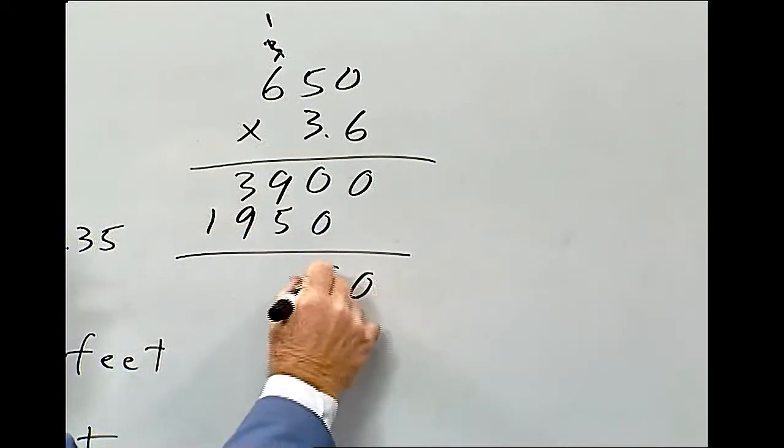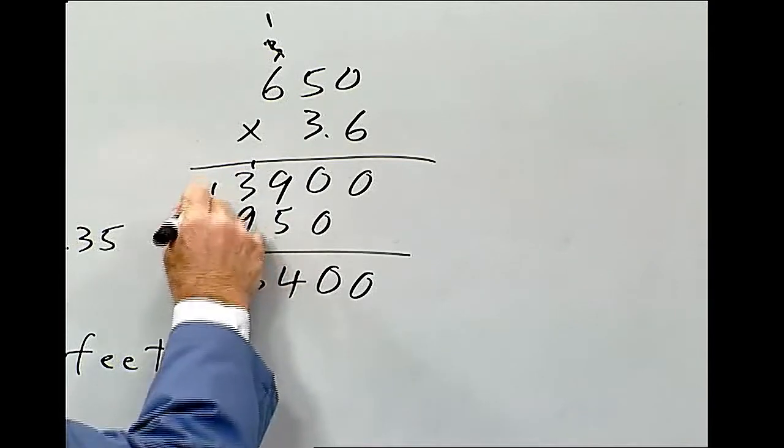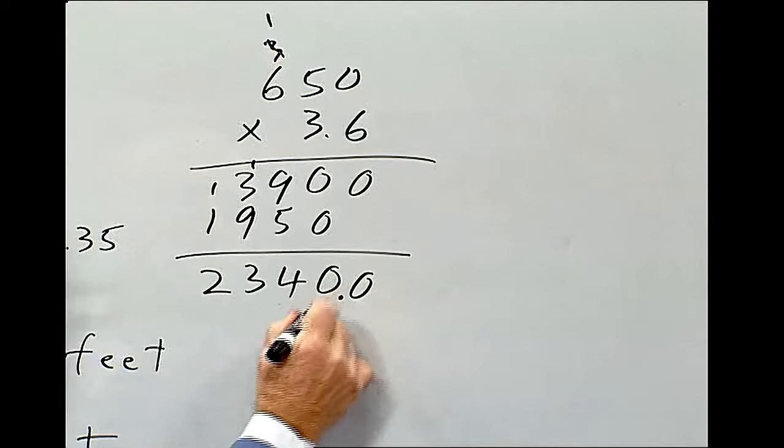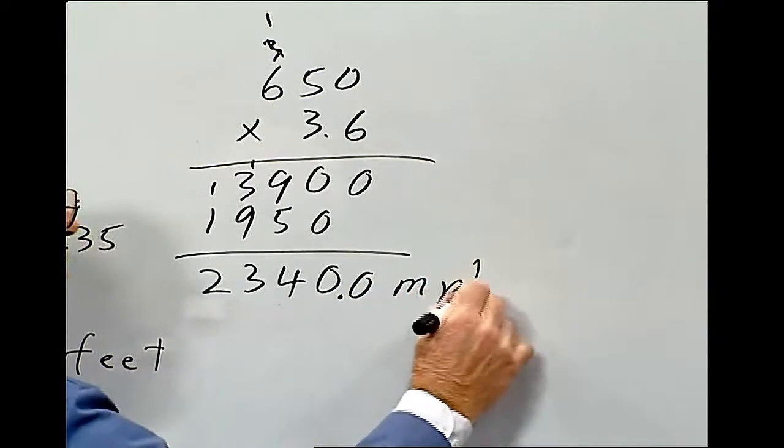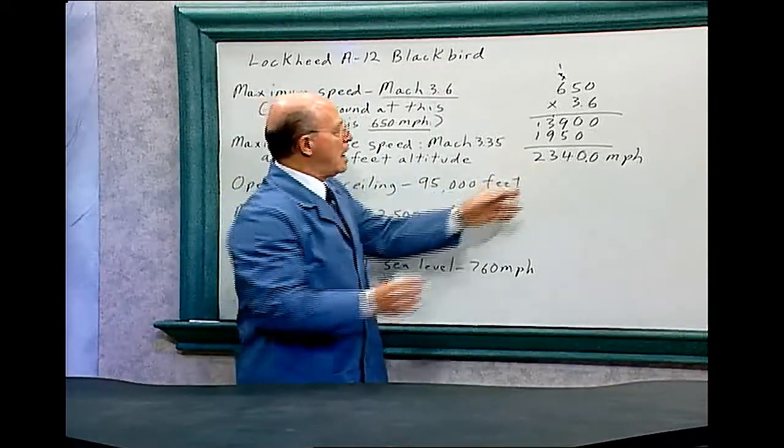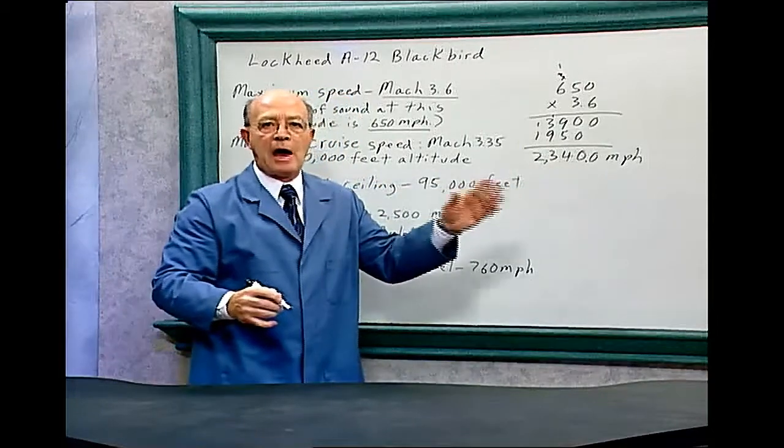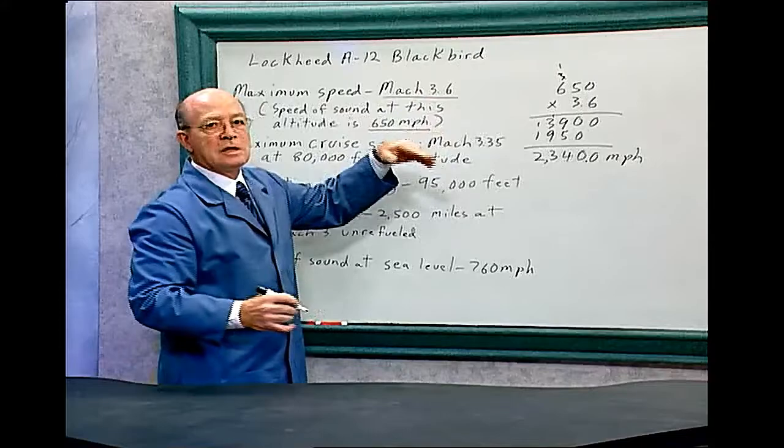So, that plane, the Blackbird, is flying 2,340 miles per hour when it's flying at Mach 3.6 at that altitude.